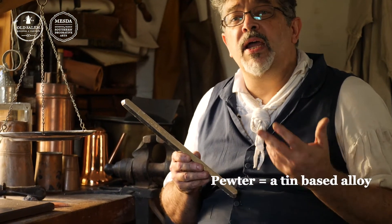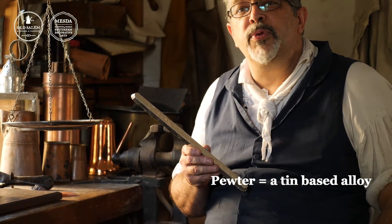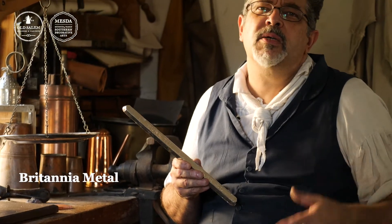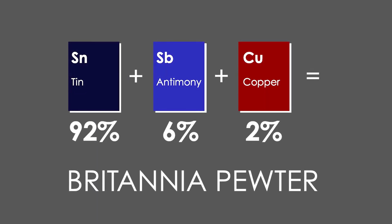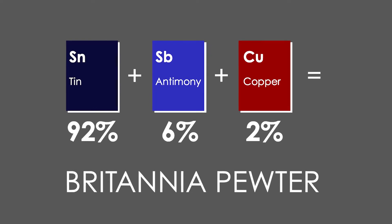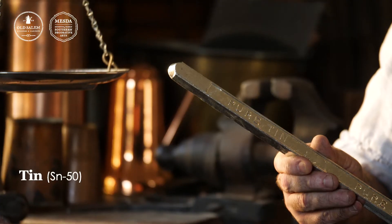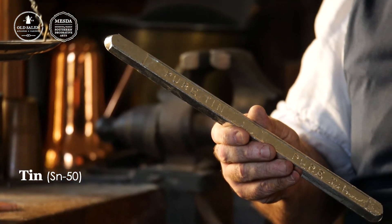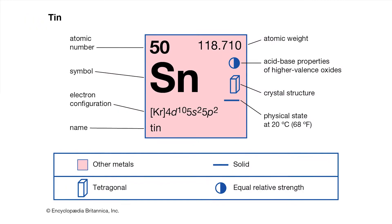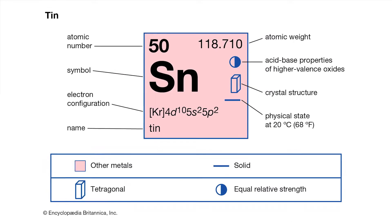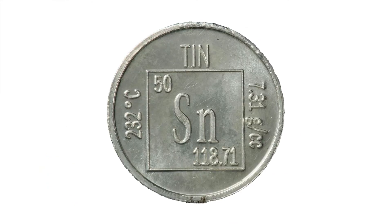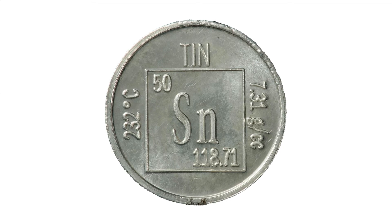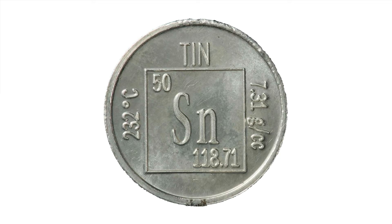Pewter is defined as a tin-based alloy. Today we're going to be using a pewter called Britannia metal. It's comprised of 92% tin, 6% antimony, and 2% copper. Tin is the most important element in our pewter. Tin provides high luster and is considered the fourth most valuable metal in today's commodity market, following only platinum, gold, and silver.